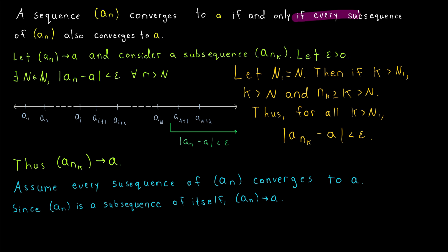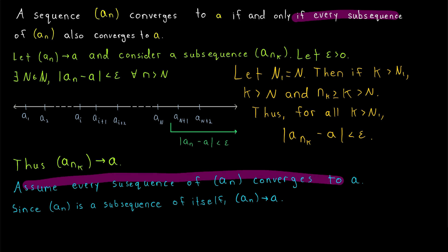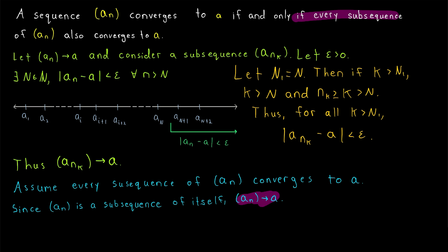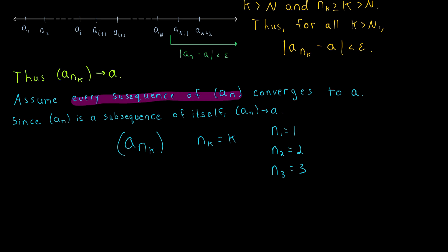To finish, we need to prove that if every subsequence of aₙ converges to a, then aₙ converges to a. We assume every subsequence of aₙ converges to a. But aₙ is a subsequence of itself — it is the subsequence aₙₖ where nₖ = k, meaning n₁=1, n₂=2, n₃=3, and so on, taking every term from the original sequence. So when we assume every subsequence converges to a, that includes aₙ itself, which must therefore converge to a.